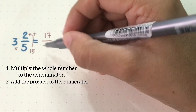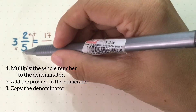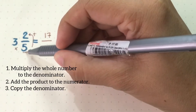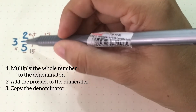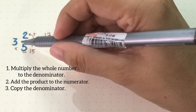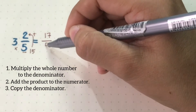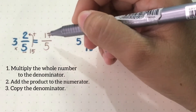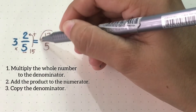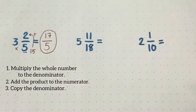And for the third step, you just have to copy the denominator from the original mixed number, and that is 5. So your answer is 17 over 5.